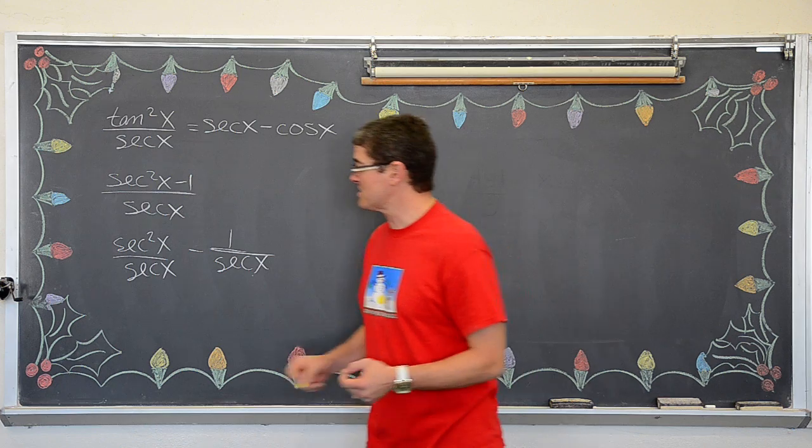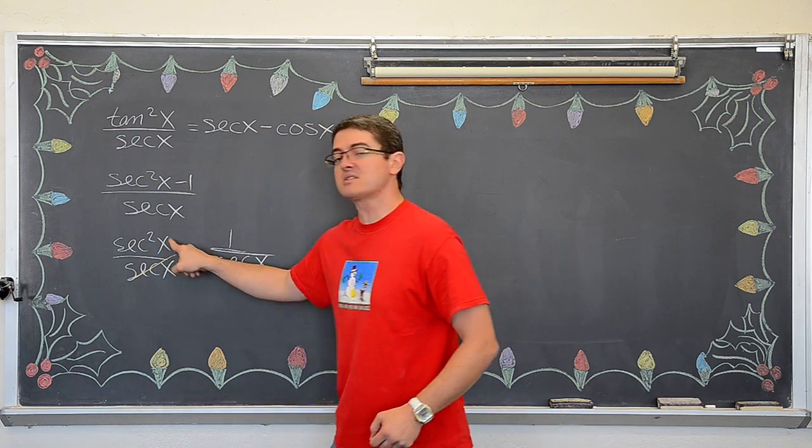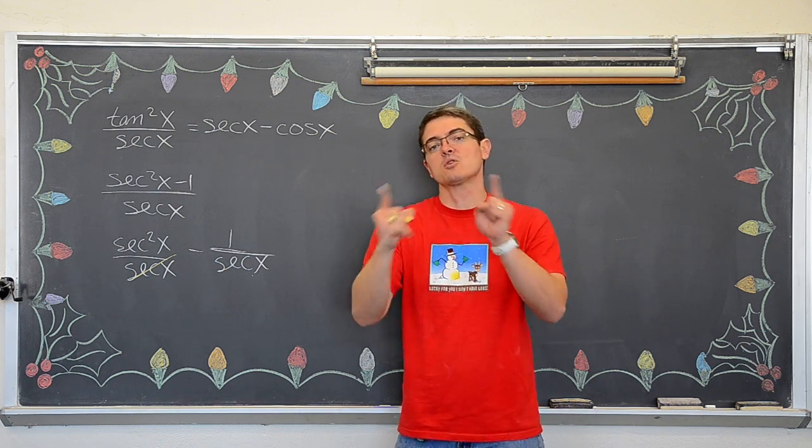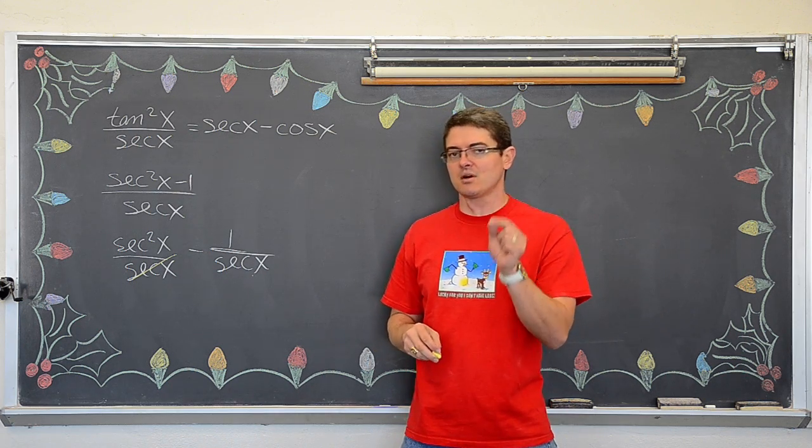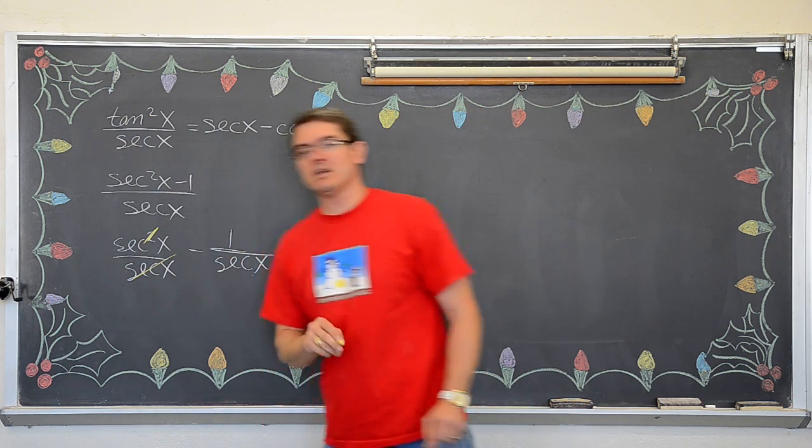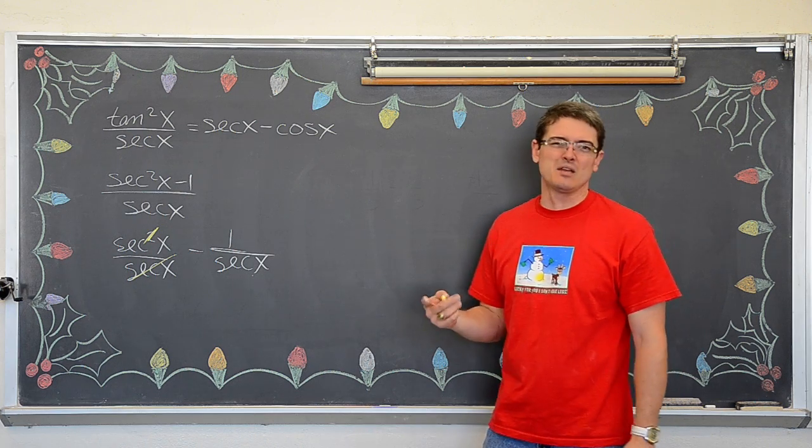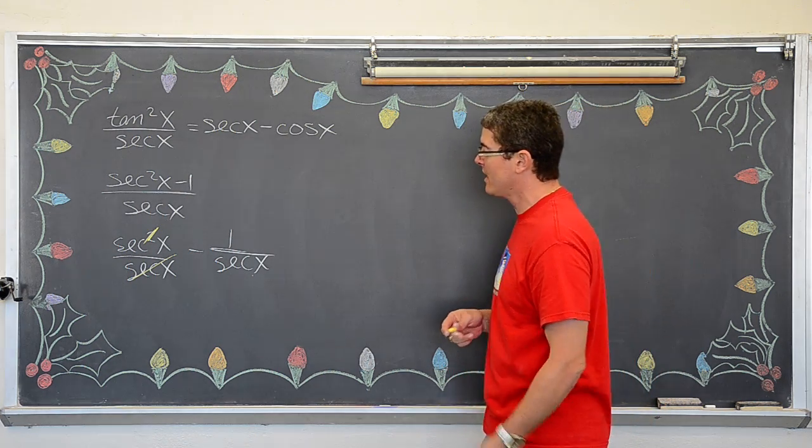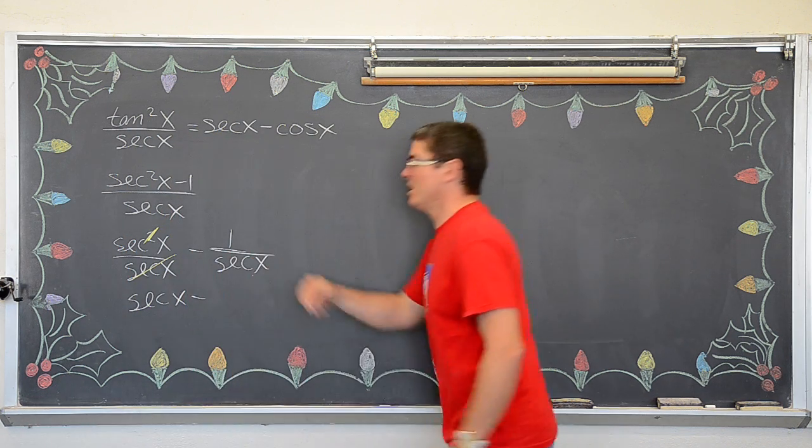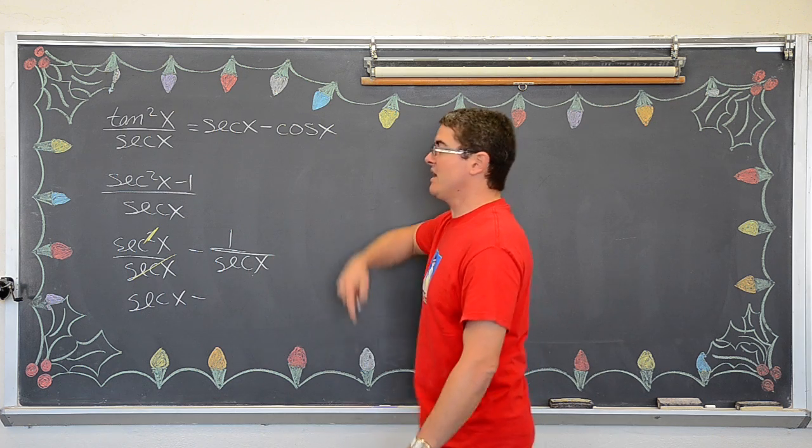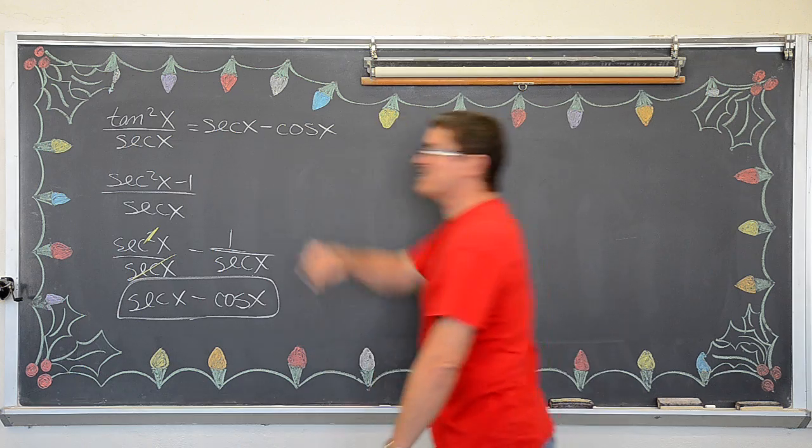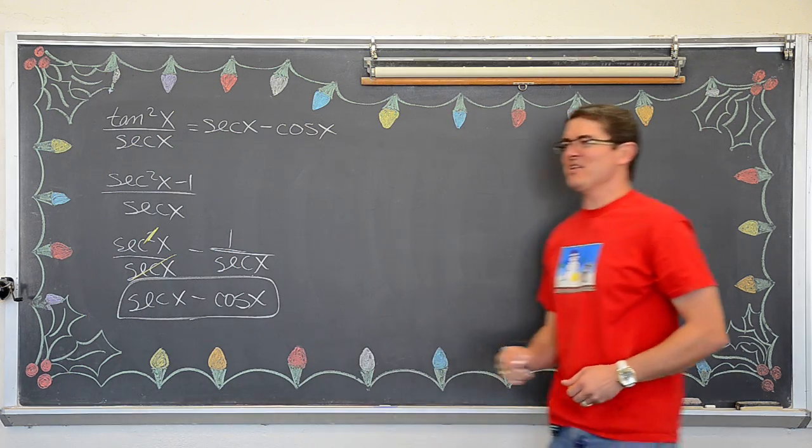Because this is secant times secant over secant. And secant times secant, when two things are multiplied together, then they are factors, not terms. So, this one secant on the bottom will cancel out with one of the two secants on top. And you can think when you divide like bases, you subtract the exponents as well. And we get secant minus one over secant, one over secant, reciprocal function. Yeah, you are right! That is cosine and that is a match! Woo! Alright! Going on to the next one.